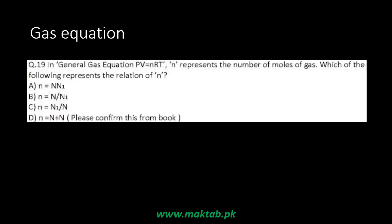The general gas equation is from experimental data, where n represents the number of moles of gas. We know that number of moles equals number of molecules divided by Avogadro's number. In option A, N (number of molecules) appears in the numerator instead of the denominator, so option A is wrong.